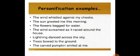'Trees bow to the ground' — bowing is something a knight does in front of a king, a human action given to trees. 'The carved pumpkin smiled at me' — smiling is a human feature given to the pumpkin. So whenever I personify an object and give it human features like smiling or bowing, it is called personification.